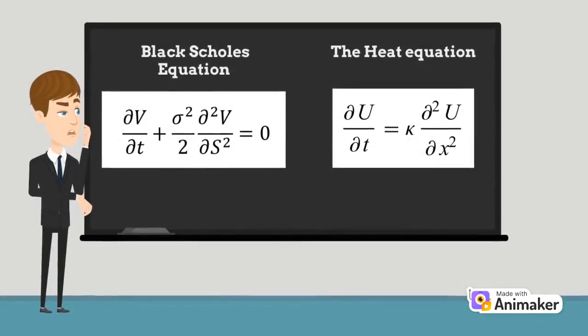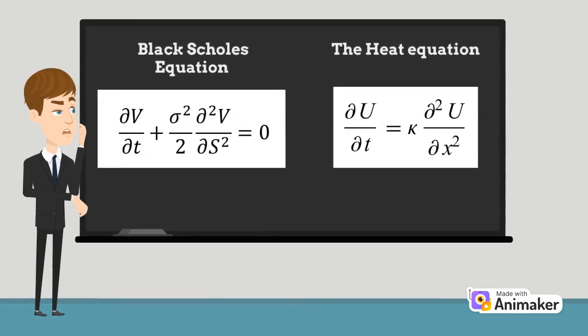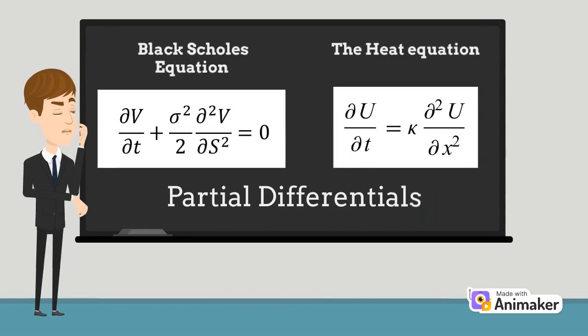Both the Black Scholes equation and the heat equation have the exact same mathematical form. The form of these two equations is presented as partial differentials.